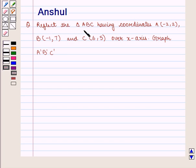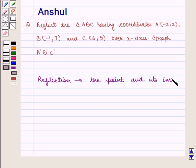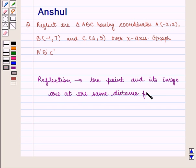The question says: Reflect the triangle ABC having coordinates A(-2, 2), B(-1, 7) and C(6, 5) over the x-axis to find A', B', C'. We know that in reflection, the point and its image are at the same distance from the line of reflection.